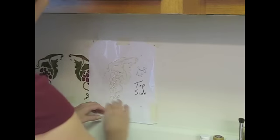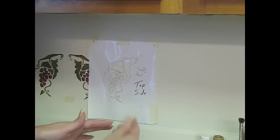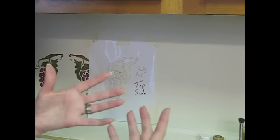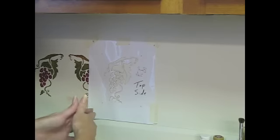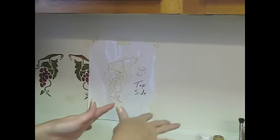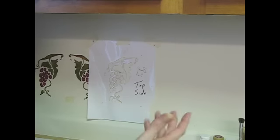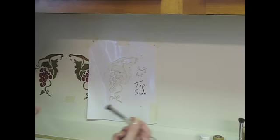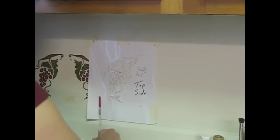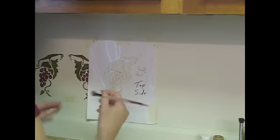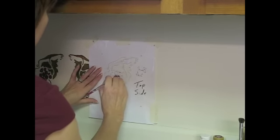Now the thing about using registration marks is you want to make sure that your tape is just behind that small triangle. You don't want to get tape behind any of your stencil because then you'll be stenciling onto the piece of tape. So that's just something to watch out for. We're going to start stenciling. I have some different colors out here and I'll talk to you about those as I go. Let's just start stenciling.